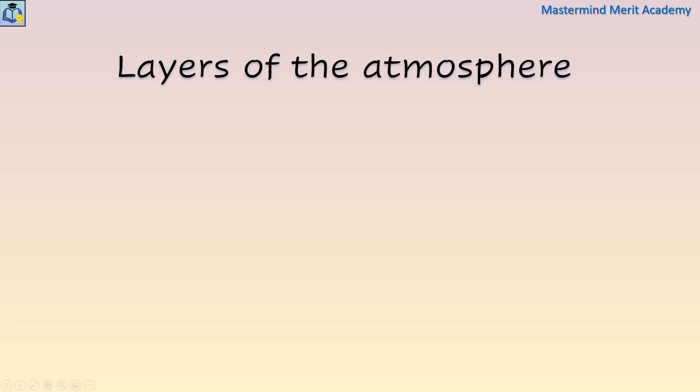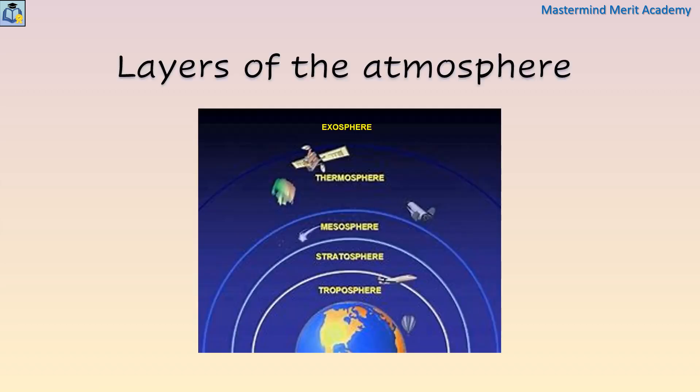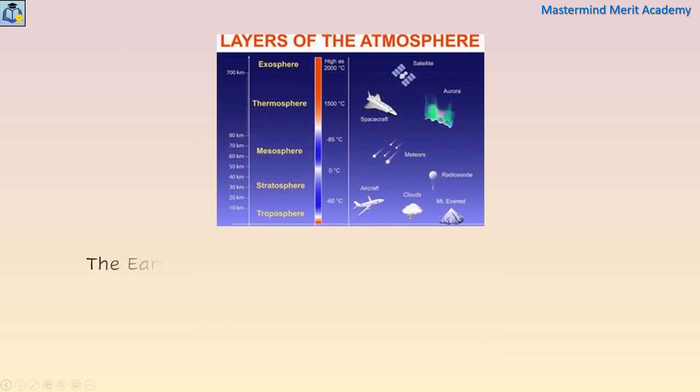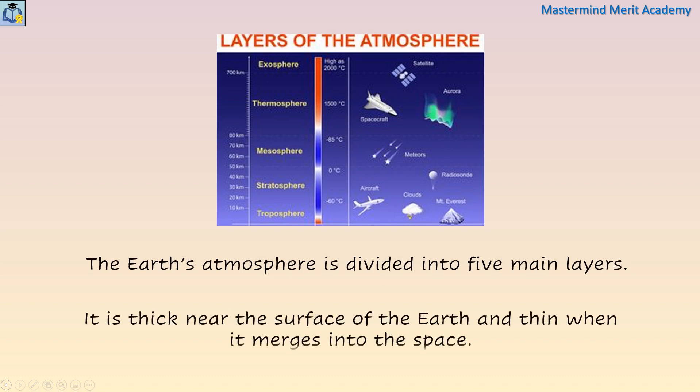Layers of the Atmosphere. The Earth's atmosphere is divided into five main layers. It is thick near the surface of the Earth and quite thin when it merges into space. Moving upward from ground level, these layers are called the troposphere, stratosphere, mesosphere, thermosphere, and exosphere.